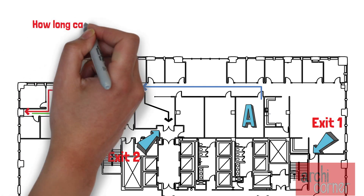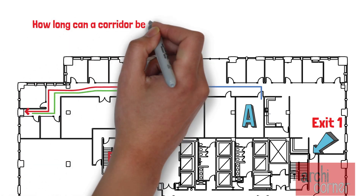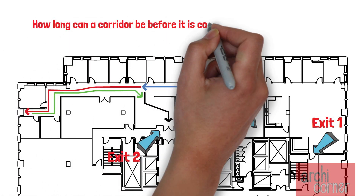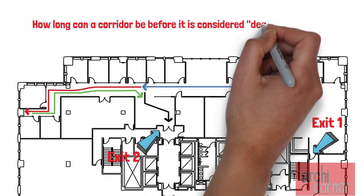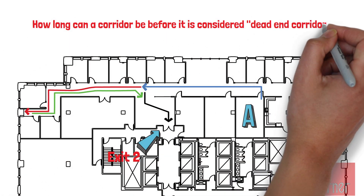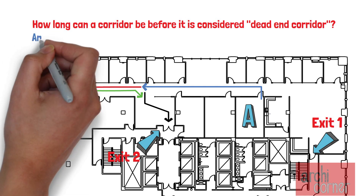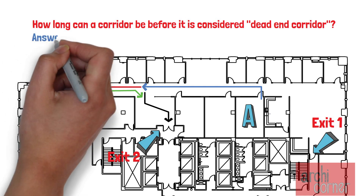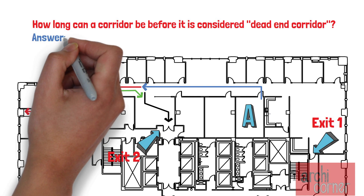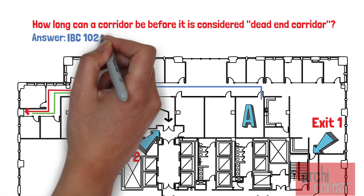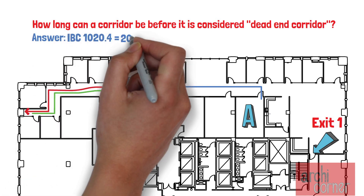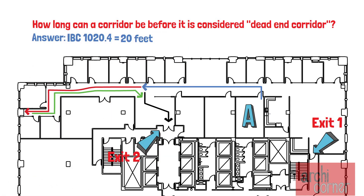The question is: how long can a corridor be before it is considered a dead end? This same section of IBC 1020.4 clarifies that corridors become a dead end once they exceed 20 feet in length.